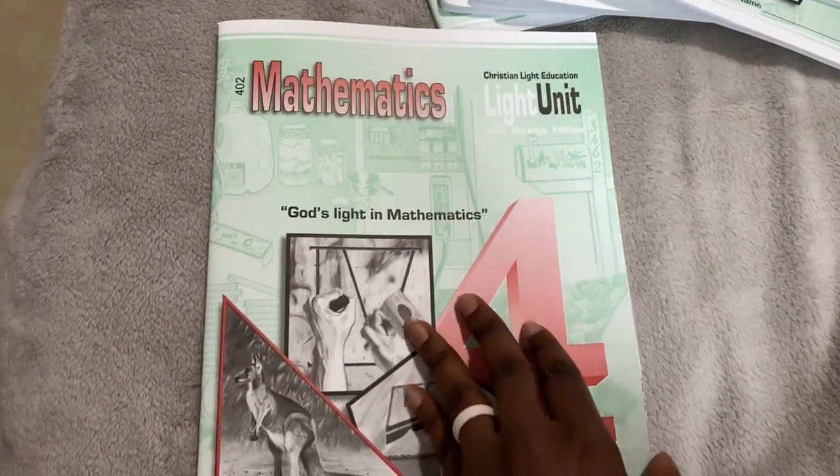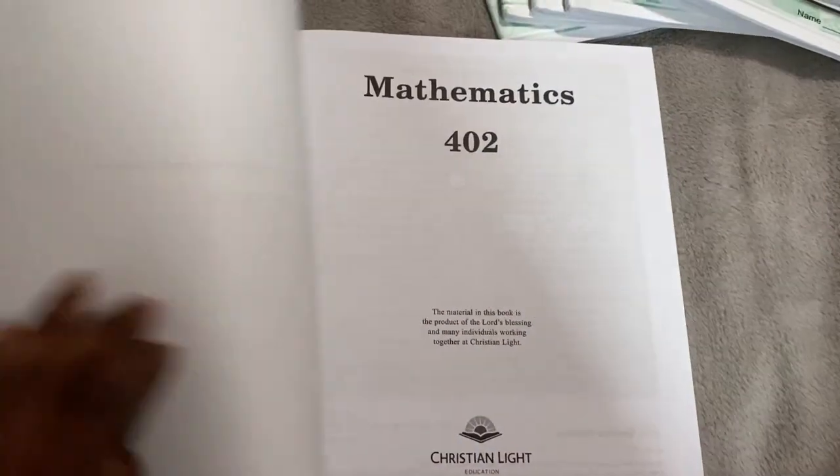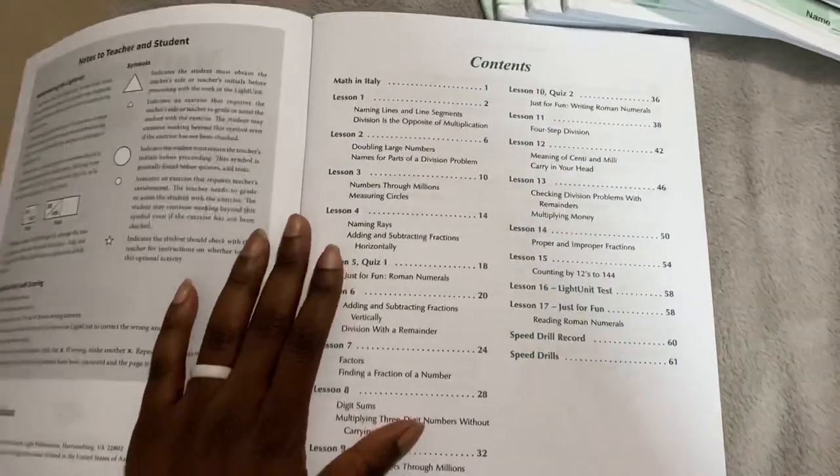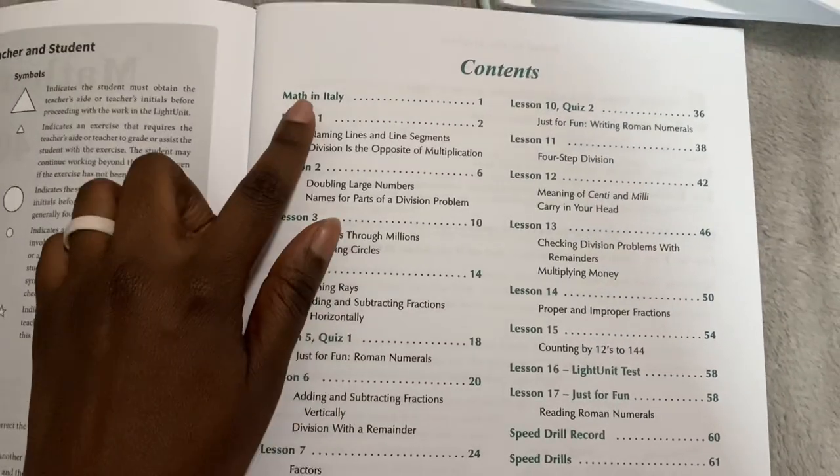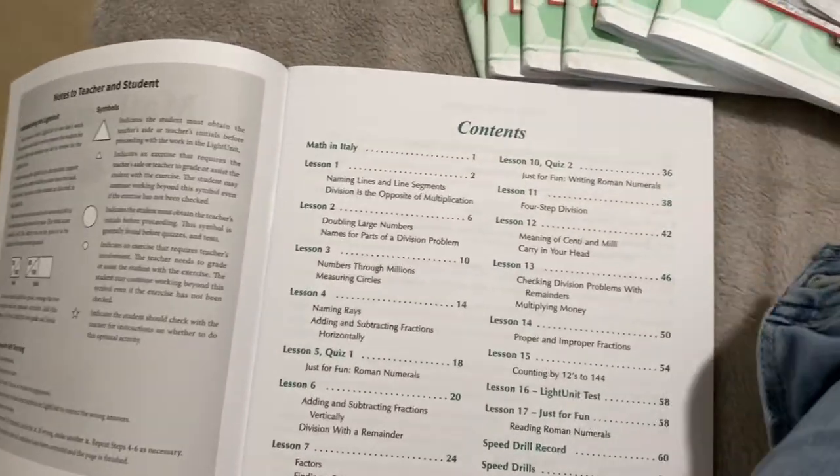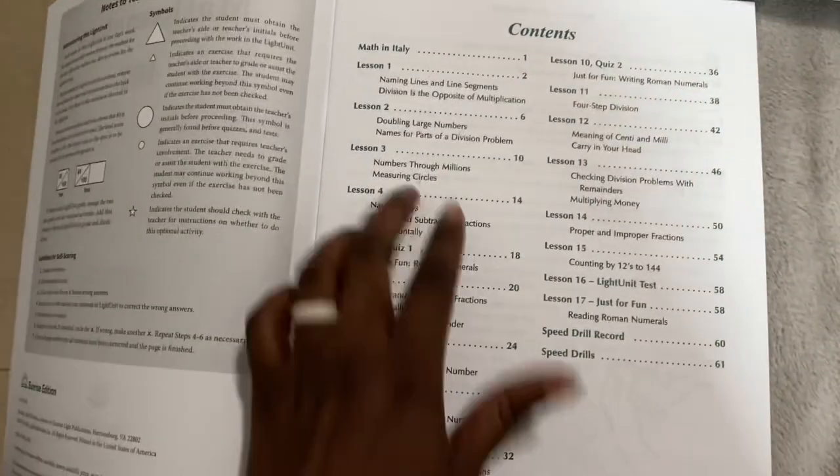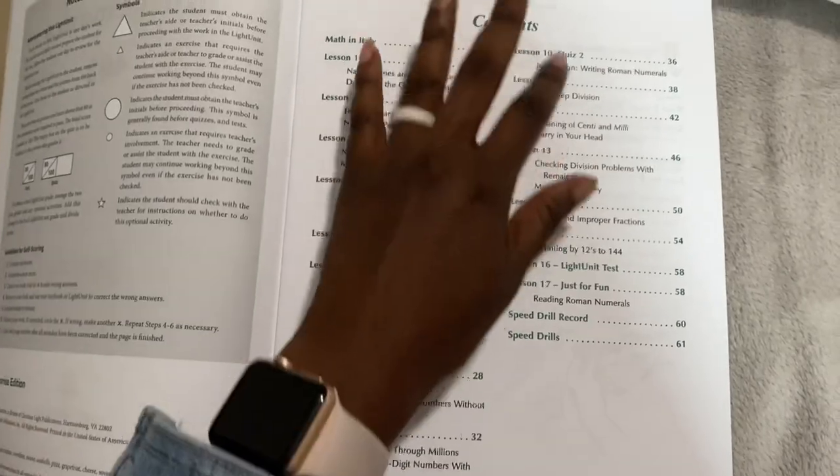And in every light unit, you are going to get that light unit's test, and it's always going to be in the center. And they do it that way so you can tear it out because I keep all the tests, but I do not keep the light units. So that's 4-0-1. So I'm going to show 4-0-2 just because it's really the beginning of level 4.